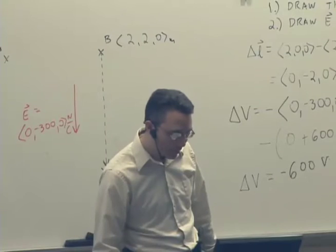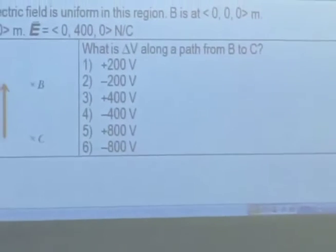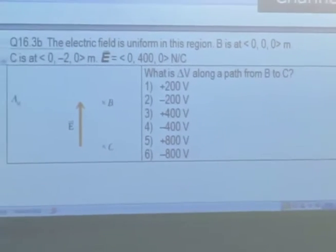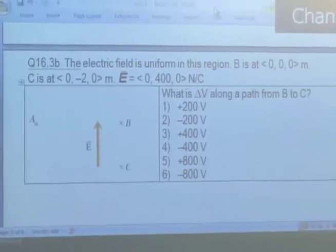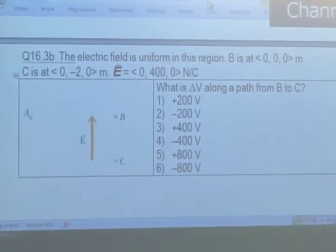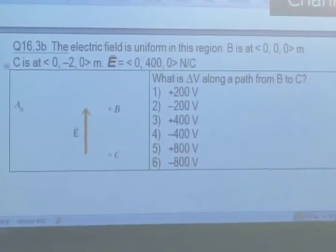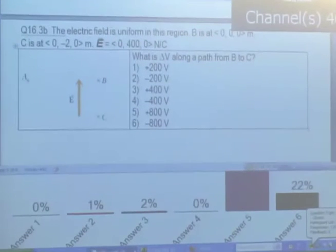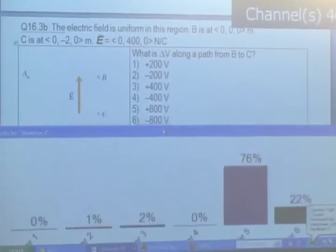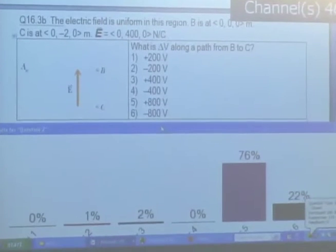You've got to be a little bit careful about directions and signs here because they're going to be extremely important. Let's try another one. Same-looking situation — we now have the electric field pointing up. B is at (0, 0, 0), C is at (0, −2, 0). Electric field is (0, 400, 0) newtons per coulomb. What's delta V from B to C? Most of us are saying it is a positive 800 volts.